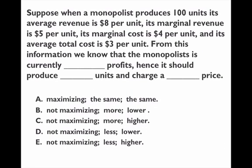Now we're going to do the one from the review today — I thought a lot of people missed this question. The question reads: suppose when a monopoly produces 100 units, its average revenue is $8, its marginal revenue is $5, its marginal cost is $4, and its average total cost is $3. From this we need to determine: what do we know about monopoly profits, should they increase or decrease output, and what should they do to price?